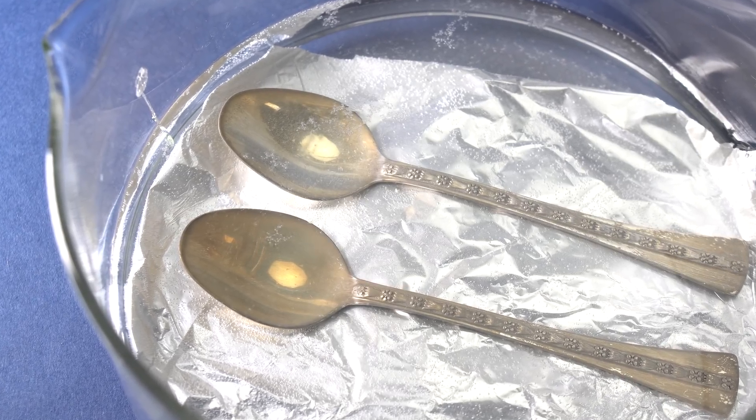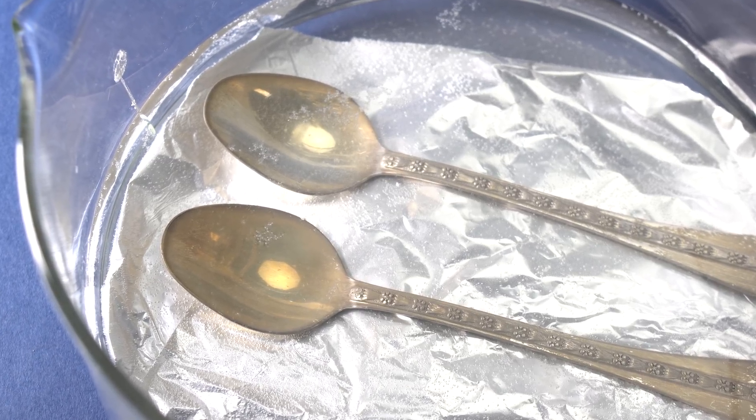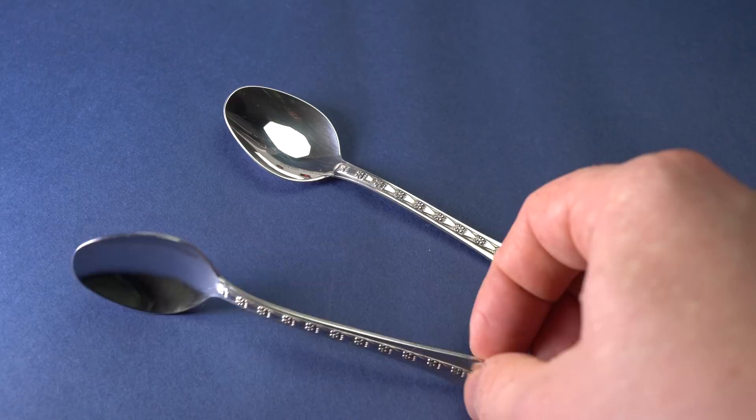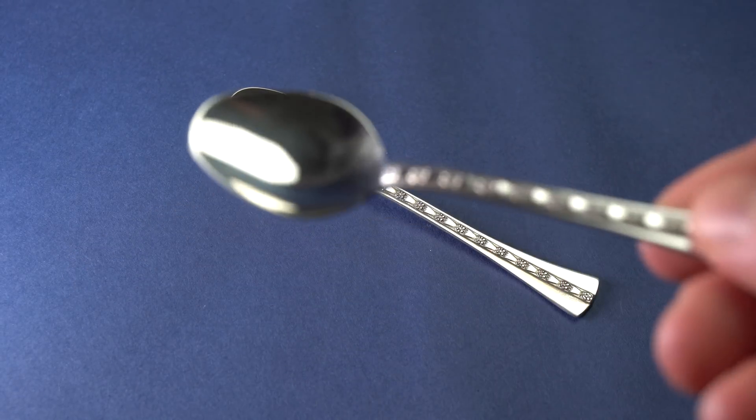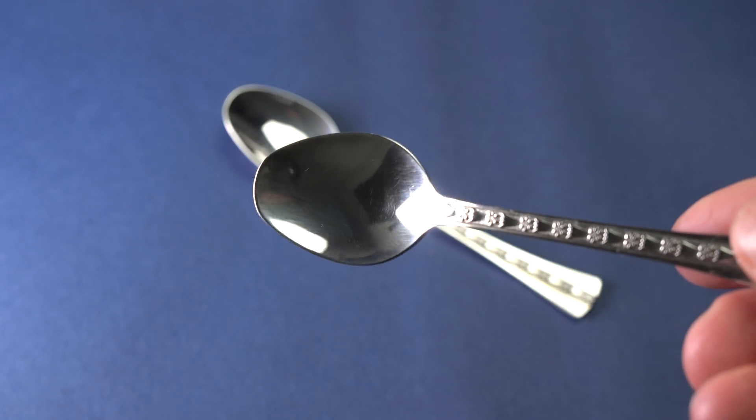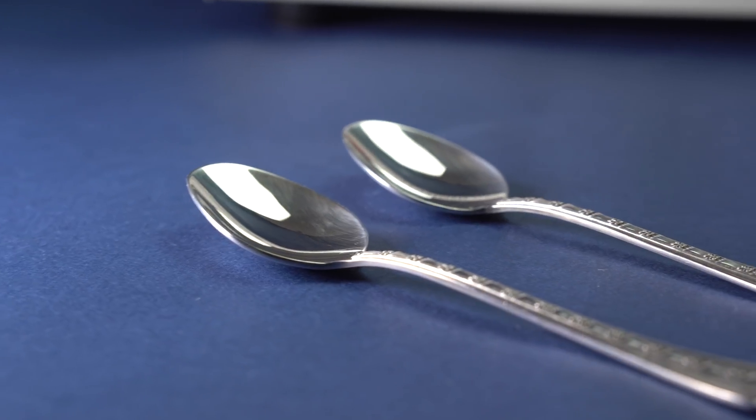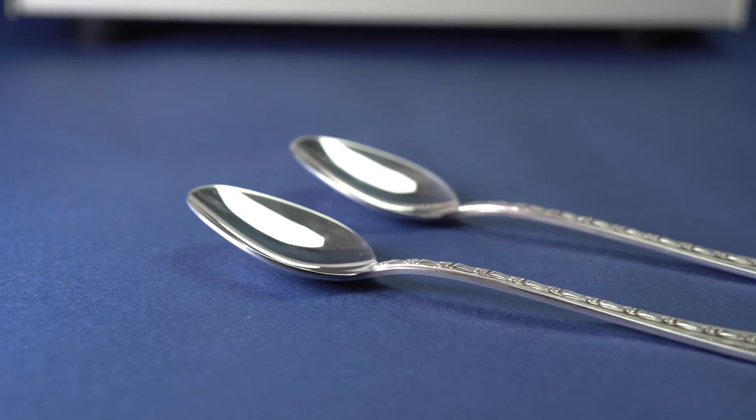As a result, after spending an hour in this solution, silver began looking brand new again. You can polish spoons with a piece of fabric to give it a nice shine, and tada, my cutlery shines like brand new again.